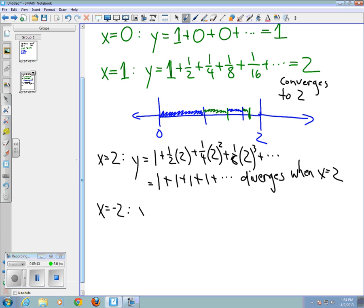And in that case, y looks like one plus one-half times negative two plus one-fourth times negative two squared plus one-eighth times negative two cubed and so on. And you can see that what this turns out to be is one minus one plus one minus one plus one minus one plus one and so on.